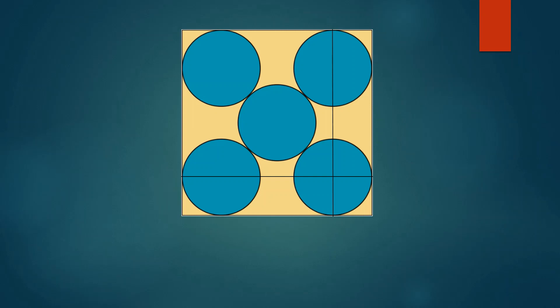Now we join the centers of the circles at top right corner and bottom left corner. This line will pass through the center of the middle circle. Can you comment the reason? Just remember, the circles touch each other externally.